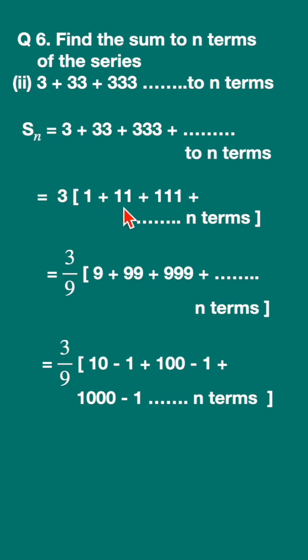Now I'm going to multiply numerator and denominator with 9. So let's write down 3 upon 9 into, multiply this numerator, so 1 into 9 plus 99 plus 999 plus up to n terms.